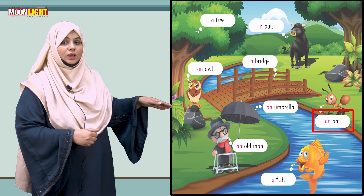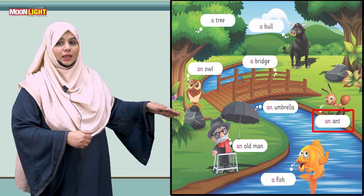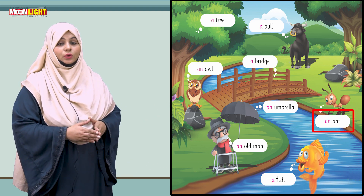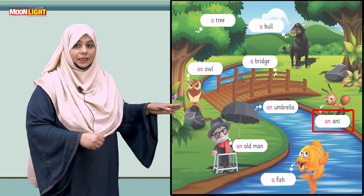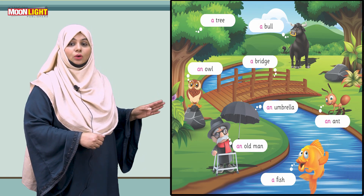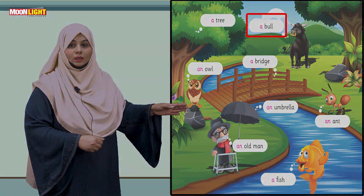Now let's read them all again together: a tree, an old man, an umbrella, a fish, a bull, an ant. Dear students, this was our today's video. I hope you have understood where we use 'a' and where we use 'an' — we use 'a' with consonant sounds and 'an' with vowel sounds. Never forget this. Stay blessed — see you in the next video.